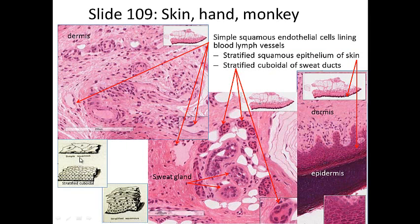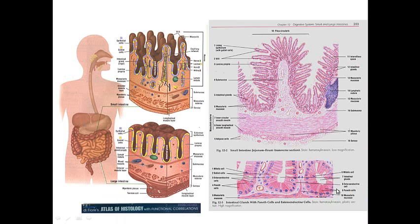Looking at simple squamous epithelium, you can see simple flattened cells in various blood vessels. Stratified means more than one layer. Cuboidal is seen in the sweat gland duct — you can see more than one layer there, so that's stratified cuboidal. Stratified squamous is what we see in the epidermis: the dermis, the epidermis, stratified squamous epithelium with flattened cells on the very surface.